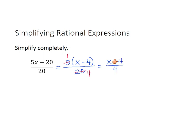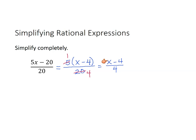You might be thinking 'oh I've got 4 over 4,' but you don't — you have some number minus 4, all over 4. For example, if x were 7, you'd have 7 minus 4, which is 3 on top, and that doesn't simplify. You can only cancel the top and bottom when you're multiplying by something, not when you're subtracting or adding.